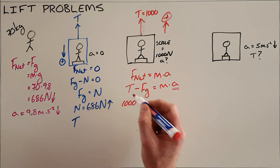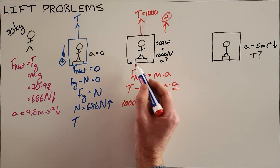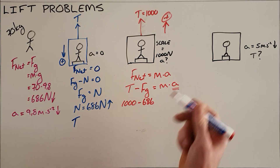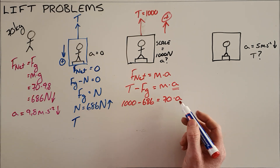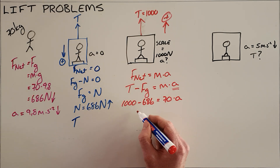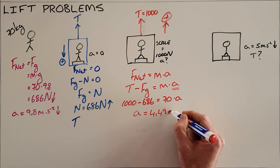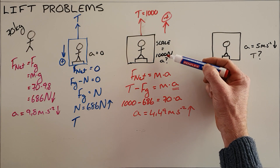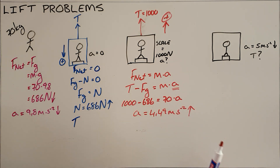The tension equals 1000 N (the scale reading), since tension and normal force are interchangeable here due to the way the lift floor is attached to the cable. The force of gravity remains 686 N, and the mass is 70 kg. Solving gives an acceleration of 4.49 meters per second squared upward. We know it is upward because the scale measures a higher value, meaning he is being pushed harder into the floor, indicating upward acceleration.